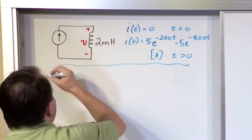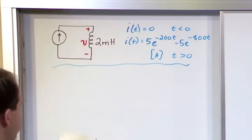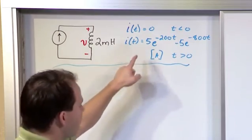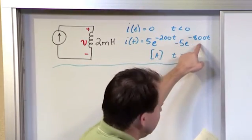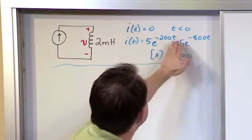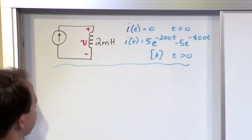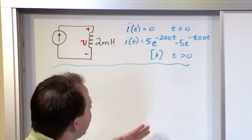So it's kind of ugly but you know all these problems end up having to be like this, to illustrate the point. So 5e to the minus 200t minus 5e to the minus 800t. It's a crazy looking amount of current. Obviously it's not a constant current source. It's a current that is changing.